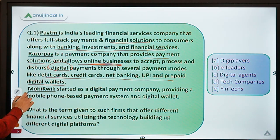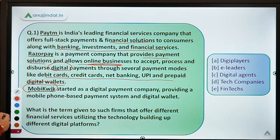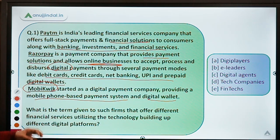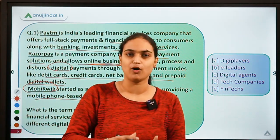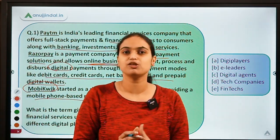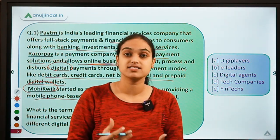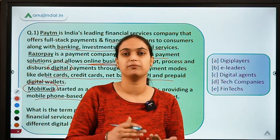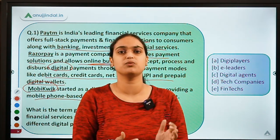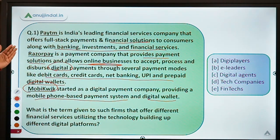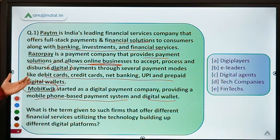The third example is Mobikwik, which started as a digital payment company providing a mobile phone based payment system and a digital wallet. So they are giving three different examples of how you can use these digital platforms to access financial services — making payments online, using e-wallets, debit cards, and credit cards. Now let's look at the question framed on the basis of these examples.